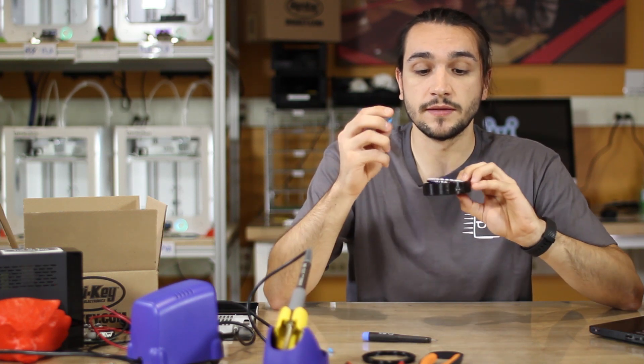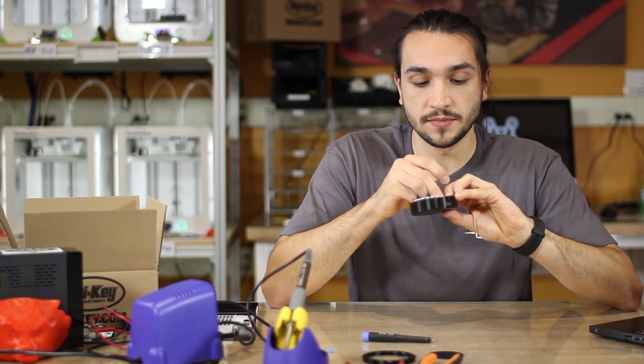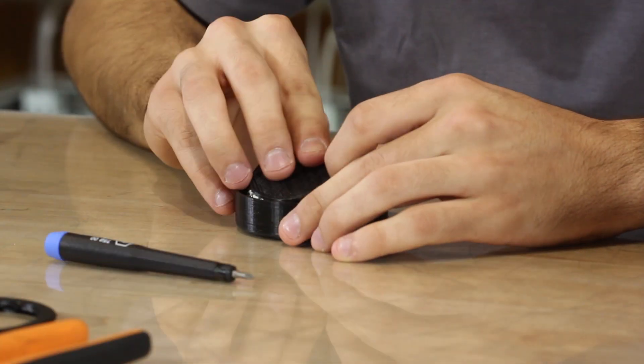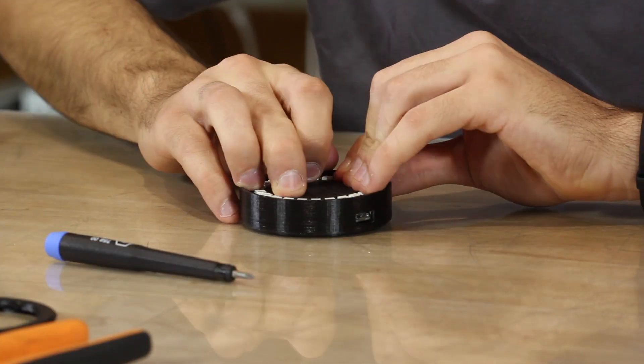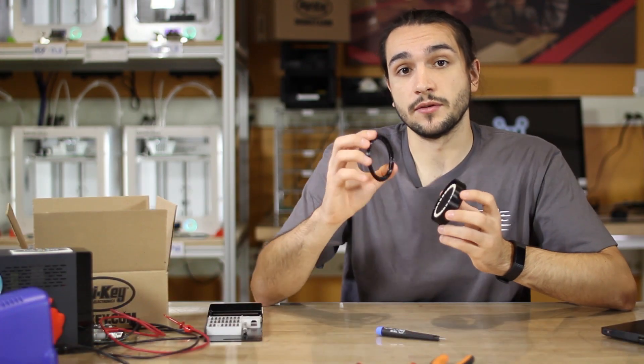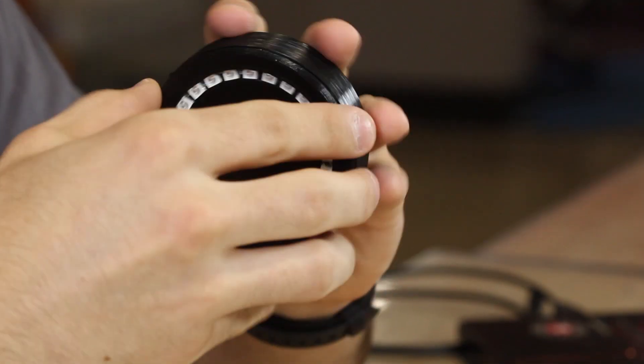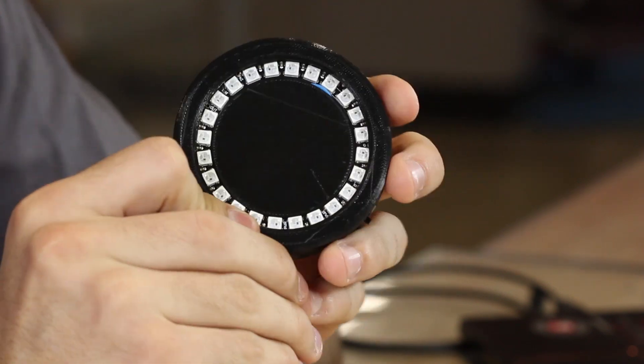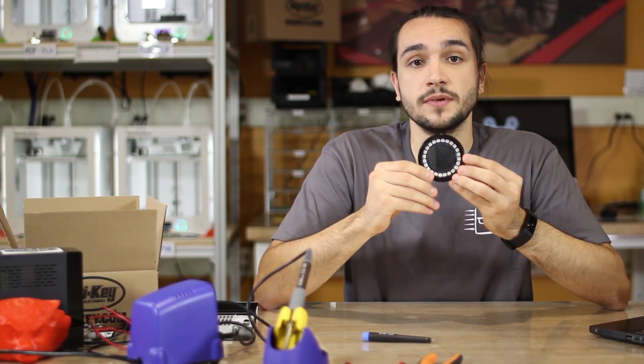Once the NeoPixel ring and the center 3D printed enclosure is added, then you can add the third and final part. This is threaded to the actual enclosure. Once you screw that on, the weather globe is complete.